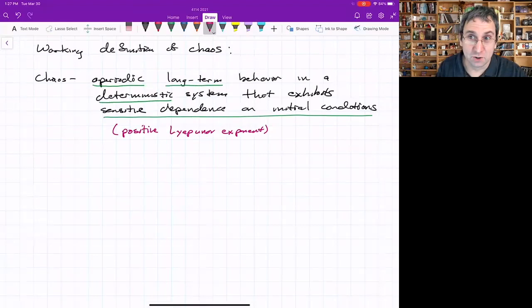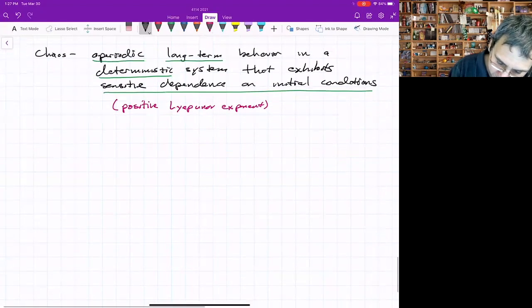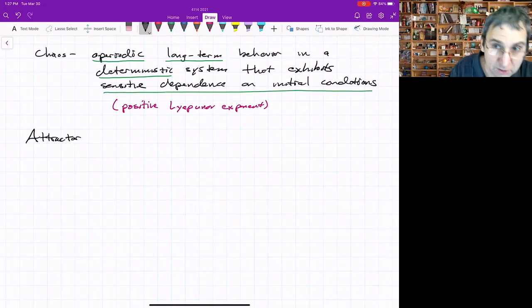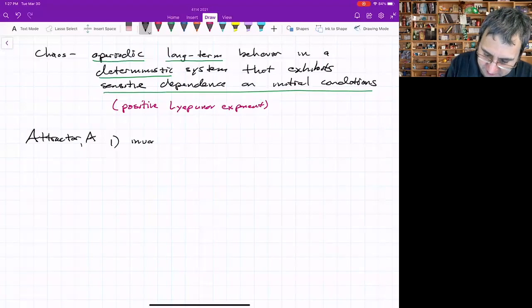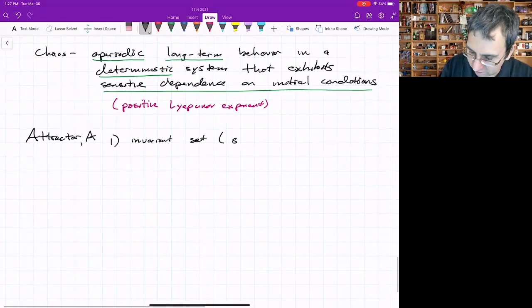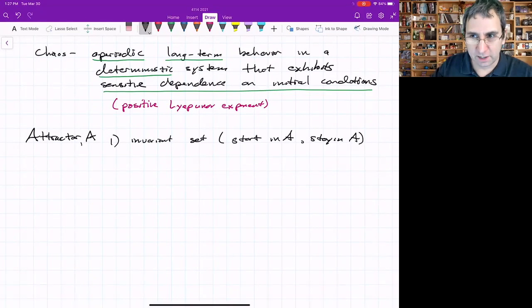Now let's define an attractor. There's some disagreement about this. Let's call this attractor A. It's going to have some properties. It's an invariant set, meaning if you start in A, you stay in A under the dynamics.